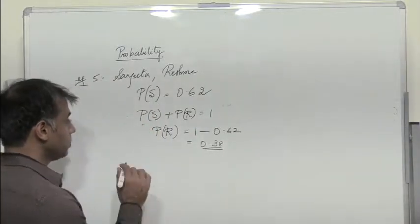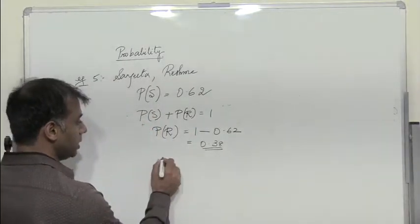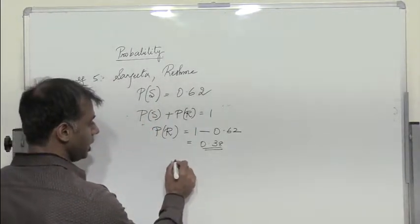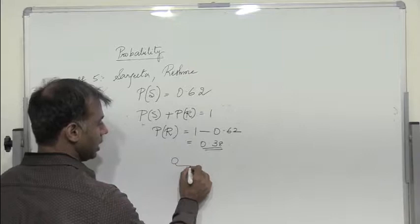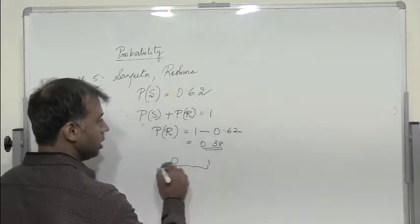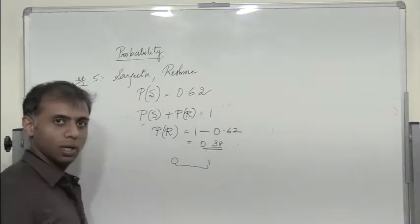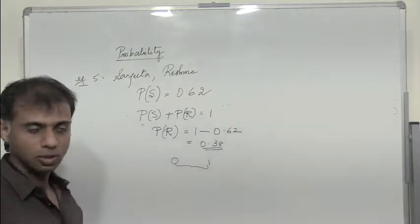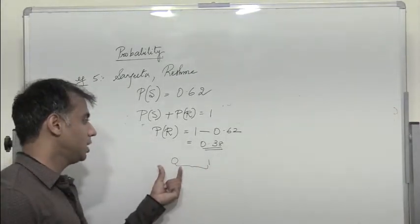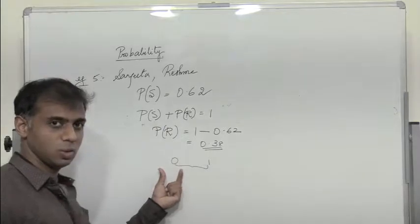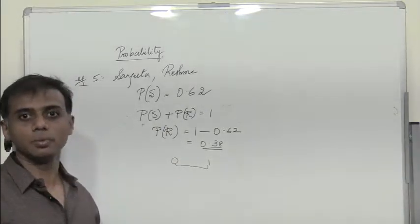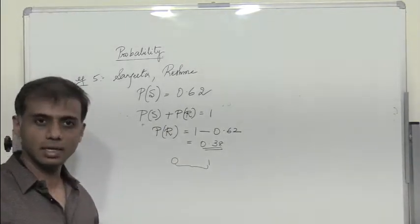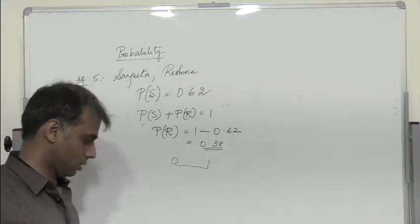Another point to be remembered is the value of probability always lies between 0 and 1. The minimum value of probability is 0 and the maximum value of probability is 1.